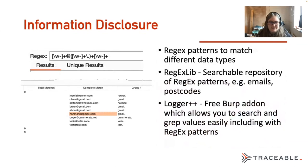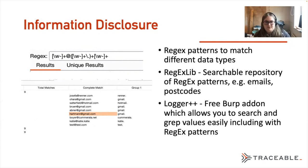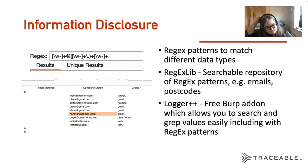For information disclosure, there are really great regex patterns to match different data types. Common ones for me based in the UK are emails and postcodes. In the UK we have GDPR, which means personal data is really restricted. It's great to approach these from the perspective of what are the GDPR-likely ones. Regex Lib lets you search and it will come up with a bunch of these different regexes — you don't even need to write them yourself. Logger++ is a Burp add-on where you can put in the regex and it will search through all the API responses to tell you which one has a match. For example, I've found APIs leaking Gmail addresses, which would be considered a GDPR violation since those are considered personal data.